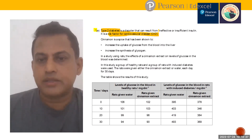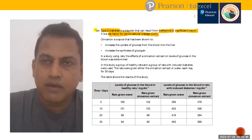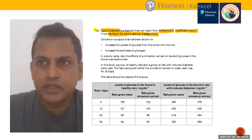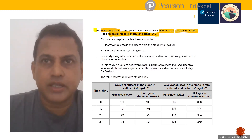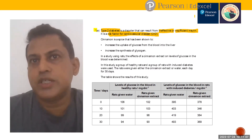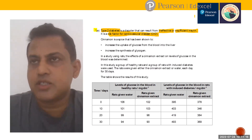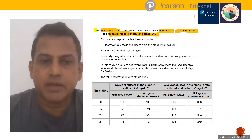In Type 2 diabetes, there is ineffective or insufficient insulin. Insulin controls blood glucose level — after we take a carbohydrate-rich diet, glucose level increases, and insulin brings it back to normal. Insulin is secreted from the pancreas. If insulin secretion decreases, or if insulin is present but not working at the cellular level — that is ineffective or insufficient insulin — both lead to Type 2 diabetes.